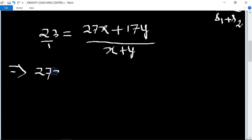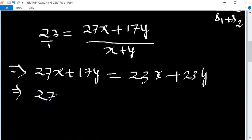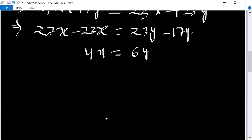After cross multiplication, 27x plus 17y equals 23x plus 23y. Now 27x minus 23x equals 23y minus 17y, which equals 6y and 4x. Therefore x upon y equals 6 by 4.